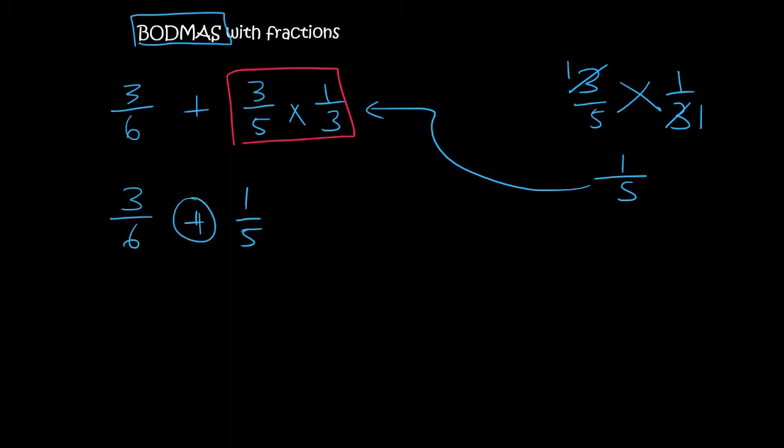Now we are plussing fractions. So remember when you plus fractions you need a common denominator. A common denominator between 6 and 5 is the number 30. So we will multiply 6 by 5 and multiply 3 by 5. We will multiply this one by 6 and this one by 6.